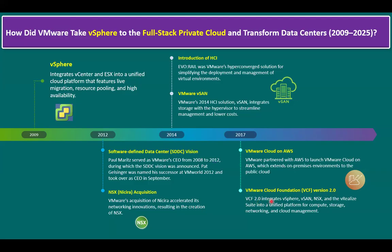VCF 2.0 integrates vSphere, vSAN, NSX, and the vRealize Suite. The vRealize Suite is a combination of vRealize Automation, vRealize Log Insight, vRealize Operations Manager, and Network Insight. Together they form one unified SDDC stack — a unified platform for compute, storage, networking, and cloud management. This marked the transformation of VMware vSphere into a true cloud operating model, not only limited to on-premises but integrated with the public cloud, modernizing infrastructure using VCF.